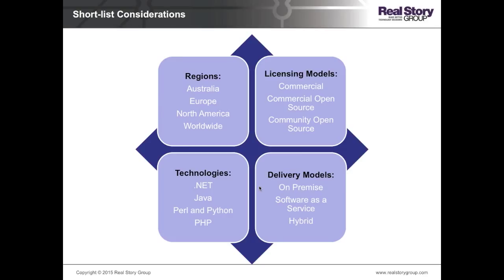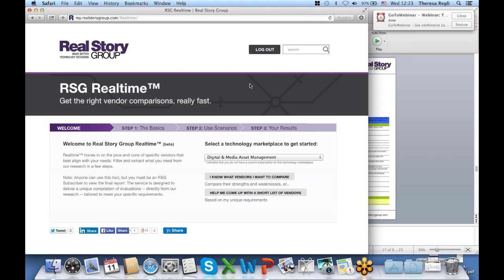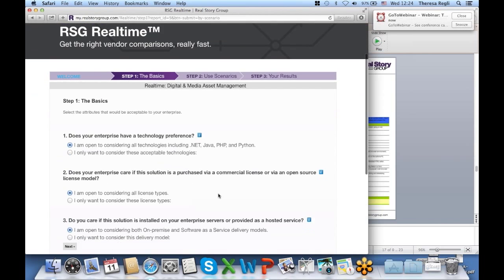Breaking this down to another level of granular detail: think about whether this team can support you based on your region, what kind of licensing model you want — open source versus commercial — and the cloudability of these tools. We have an app on our website for research subscribers where you can use these filters and apply them to your selection process. Let me go to my web browser quickly and show you this tool.